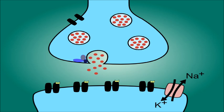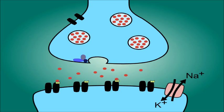Here the neurotransmitters will bind to receptors on the postsynaptic neuron. These receptors are associated with special ion channels such as the sodium channel.